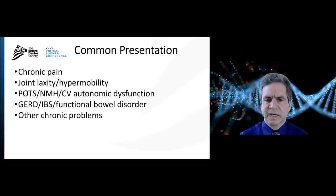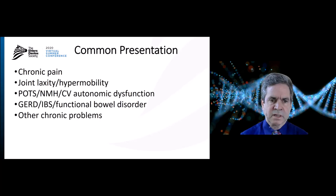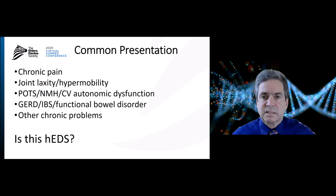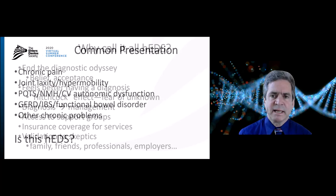GI symptoms — cramping, bloating, slow GI transit, or diarrhea. Again, if you have it, you know it. And then a variety of other chronic problems. So really, the issue at hand becomes: why not just call all of this EDS? Or more precisely, is this hypermobility type EDS, or is there something else causing these symptoms?